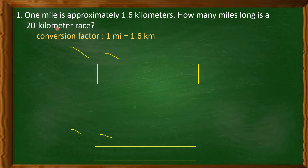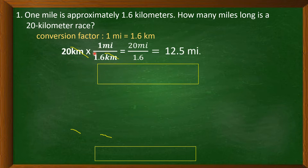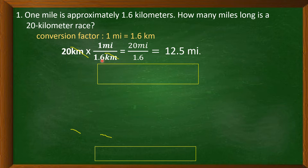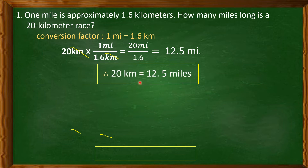We write the given 20 kilometers times the conversion factor. Since the required unit is miles, the unit mile will be in the numerator and the unit kilometer in the denominator. The kilometer units cancel out, leaving miles. 20 times 1 is 20, divided by 1.6, equals 12.5 miles. Therefore, 20 kilometers is equal to 12.5 miles.